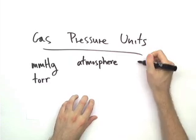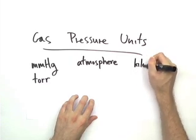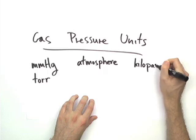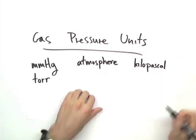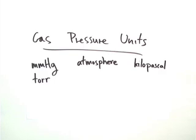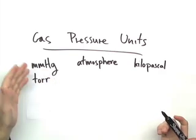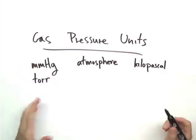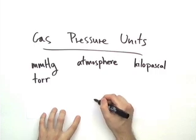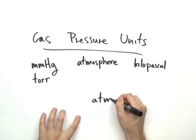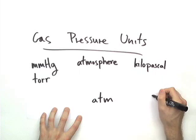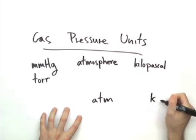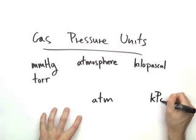And the third unit is called the kilopascal. This is also named after a scientist, Pascal, who did a lot of work on force and pressure and so forth. There are abbreviations for these. Millimeters of mercury and Torr, these are already abbreviated. Atmospheres, we can abbreviate as atm and kilopascal is abbreviated as a lowercase k, uppercase P and a lowercase a.